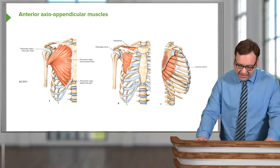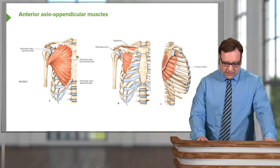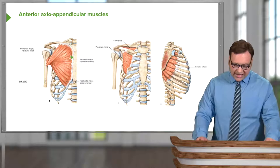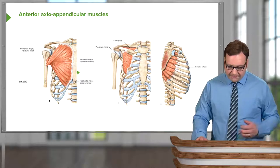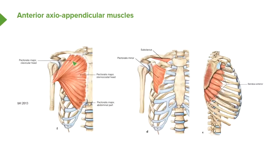Here we can see the anterior muscles. We have a whole series of them: pectoralis major, pectoralis minor, subclavius, and also serratus anterior. We'll come back to that later on.